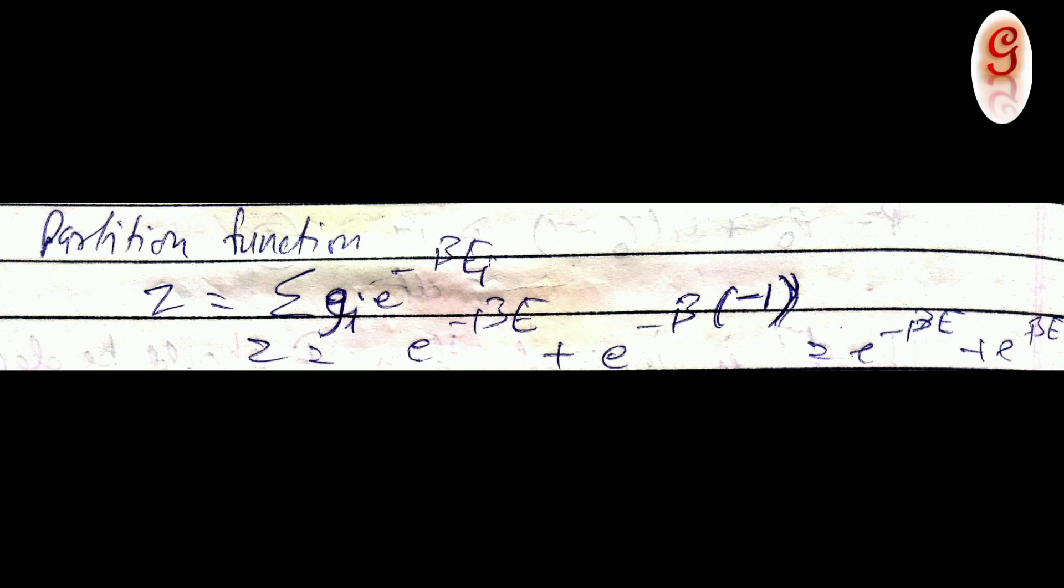Therefore, writing in partition function form, Z equals e raised to the power of minus beta E plus e raised to the power of plus beta E.